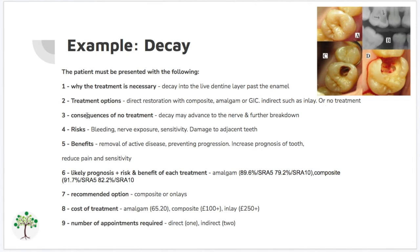No treatment is always an option. The consequence of no treatment in this case is that the decay may advance to the nerve and further breakdown may occur, causing the patient to lose the tooth altogether in the future. The risks might be bleeding, nerve exposure, sensitivity, and damage to adjacent teeth. Some benefits will be removal of active disease, preventing progression, increased prognosis of the teeth, and reducing pain and sensitivity. For likely prognosis, there is evidence on how long amalgam and composite restorations last, but you can make this more informal by sharing your own clinical experience on which is best, rather than fully relying on a study. Based on experience, you can also provide your recommended option.